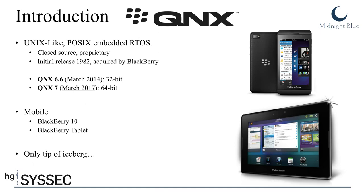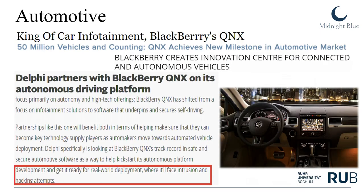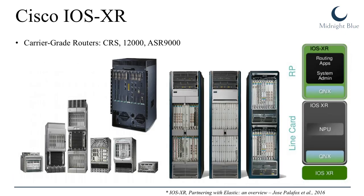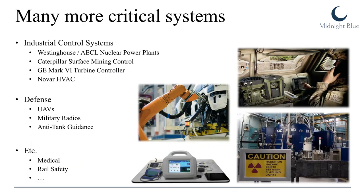QNX is most famously known for its use in mobile devices because it underpins the BlackBerry 10 operating system as well as the BlackBerry tablet OS, but really this is only the tip of the iceberg. Especially these days it's far more prominent in automotive systems, particularly infotainment systems, where it holds more than 50% of the market share, and it's said to be used in various self-driving car initiatives. For example, Delphi Automotive has partnered with BlackBerry to use QNX as the basis of its self-driving car initiative. A second very famous use of QNX is in carrier-grade routers, like the CRS series, the 12000 series, the ASR series, where QNX underpins Cisco's IOS XR operating system.